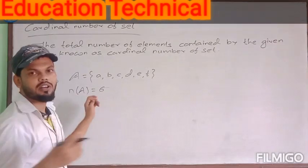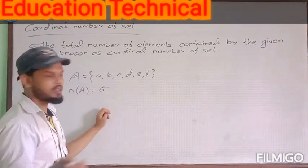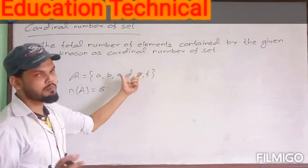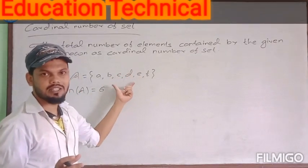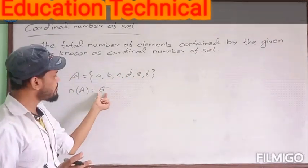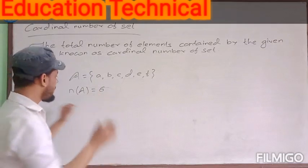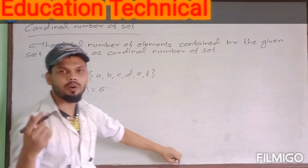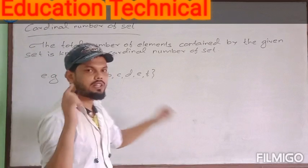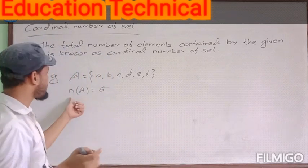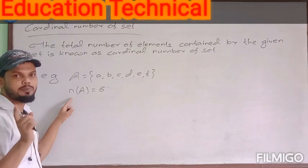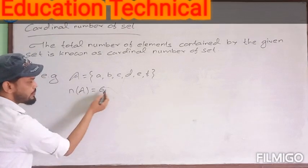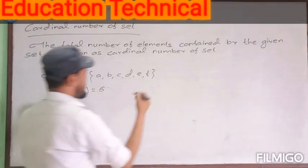We should not write it with any bracket notation other than this. We just have to write the number — we count the number of elements contained by the given set and write it as n(A) = 6. Note that we must write lowercase n, not capital N.